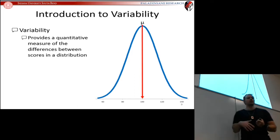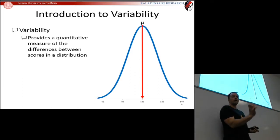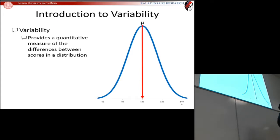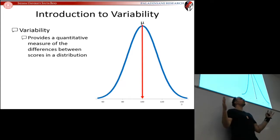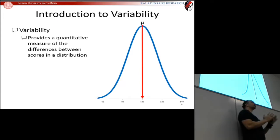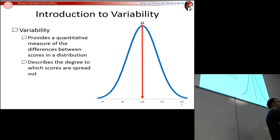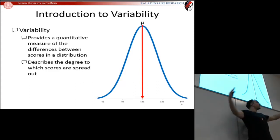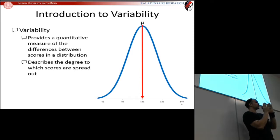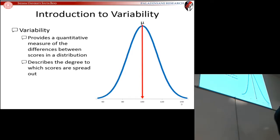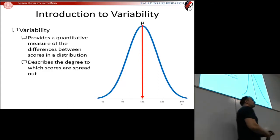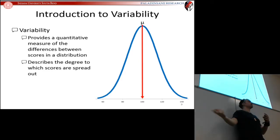Variability is another descriptive statistic — another number you can report — that gives you a quantitative measure to describe the spread of your distribution, describing how different the scores are. If you have high variability, you have very spread-out scores. If you have low variability, you have very uniform scores that are close to each other. This idea of variability will become very important when we look at inferential statistics and try to see if there's a difference between samples or populations.